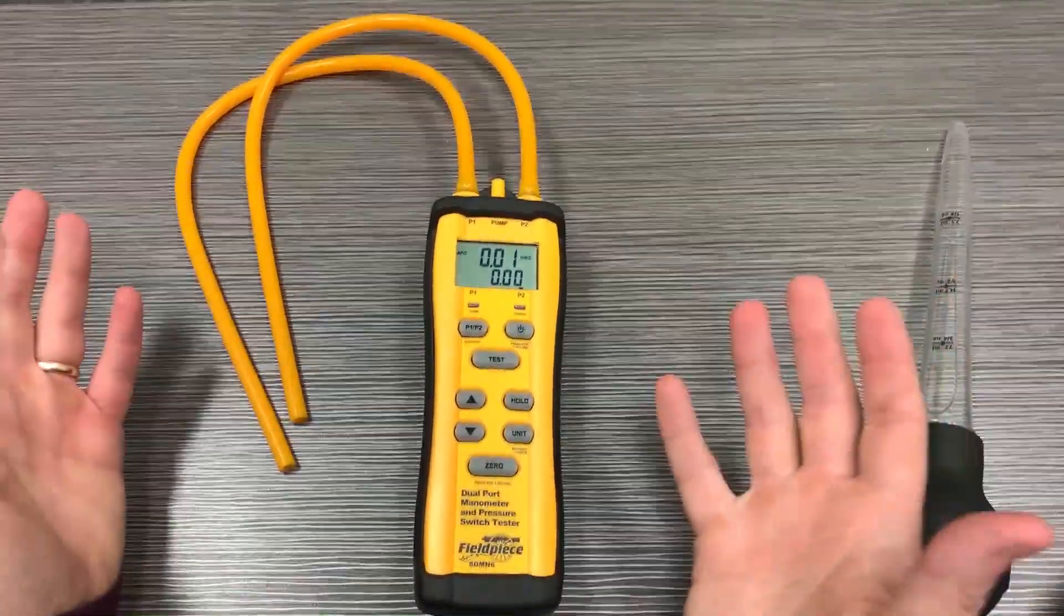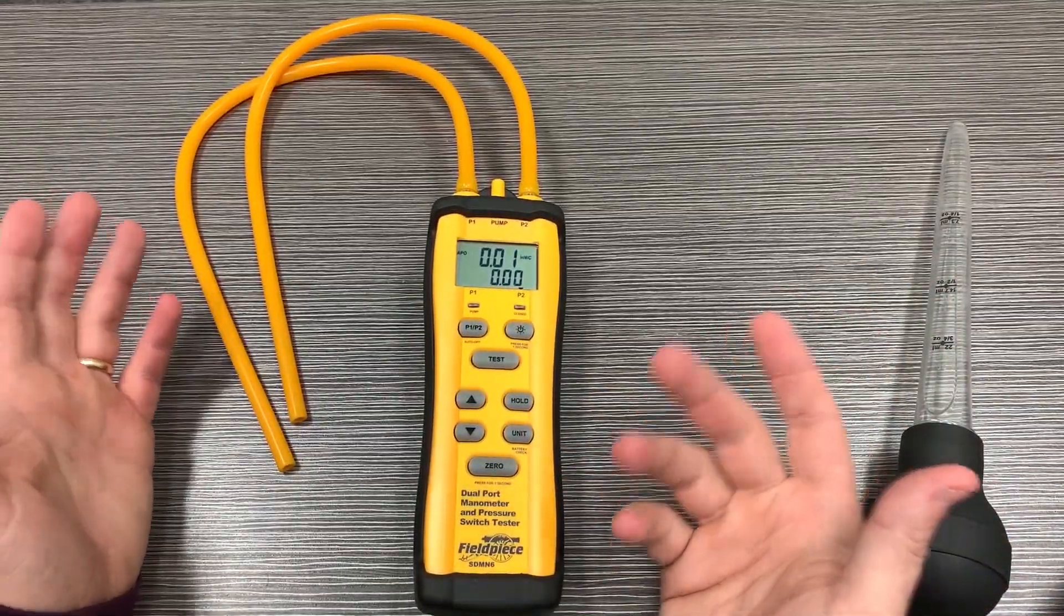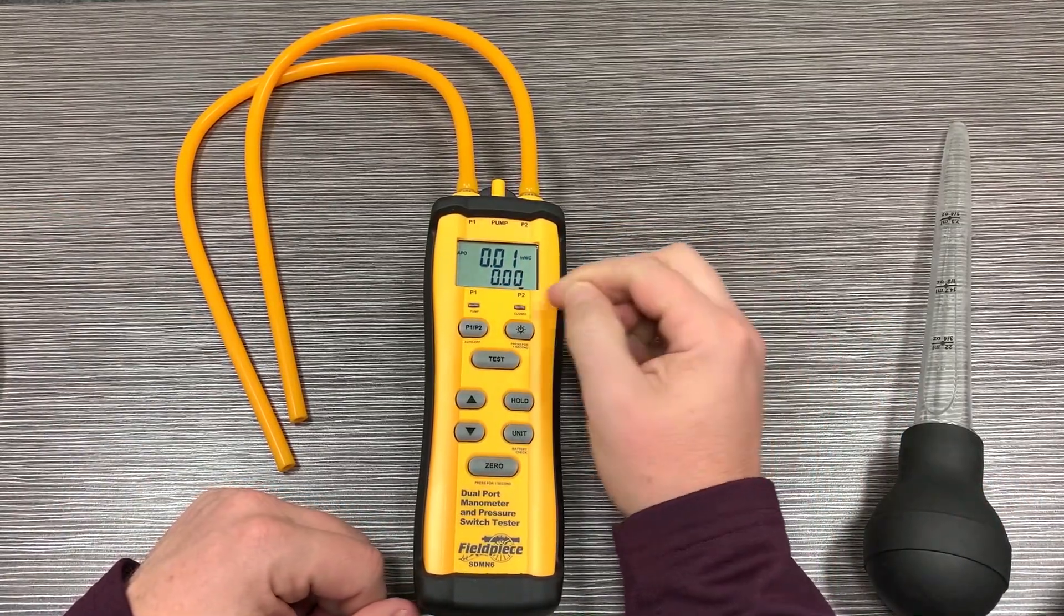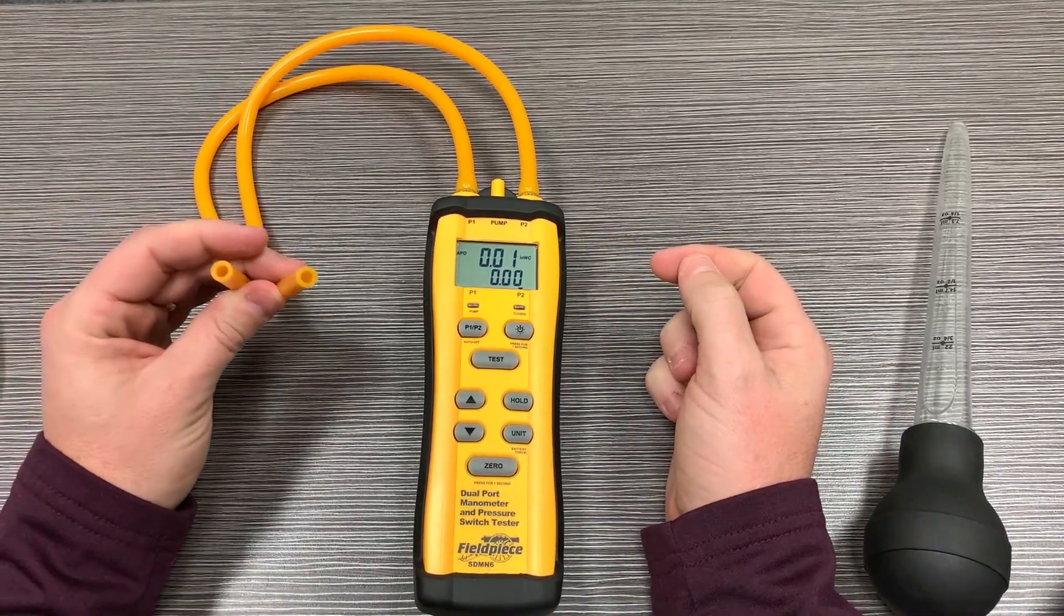All this matters because you have to know what you're looking at. If you're measuring something like total external static pressure, you would want to be looking at the bottom number because that's going to show you the differential between both of them.